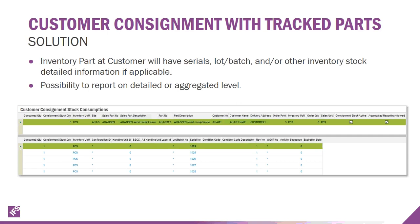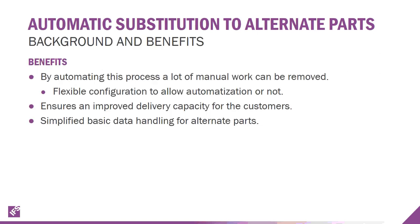Customer consignment with tracked parts: as a consigner, it wasn't previously possible to keep track of which serial or lot-traced parts a consignee used — reporting was done almost anonymously. Now consumption can be transparent and it's easier to keep track of specific part details. It's now possible to use cost per serial or cost per lot in combination with customer consignment, and ownership transfer and warranty start are moved from delivery time to consumption time, with transactions updated to reflect those changes.